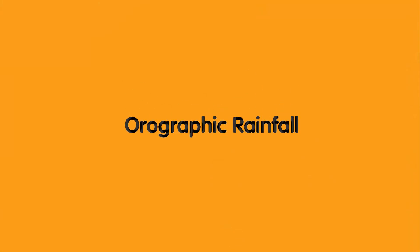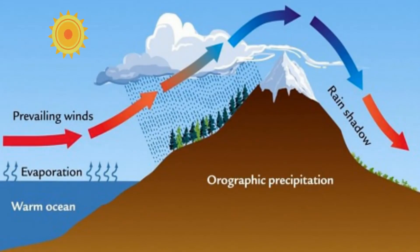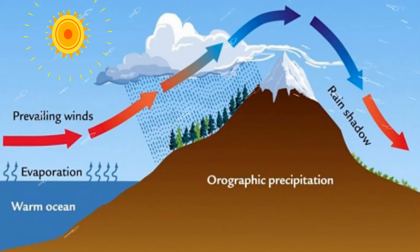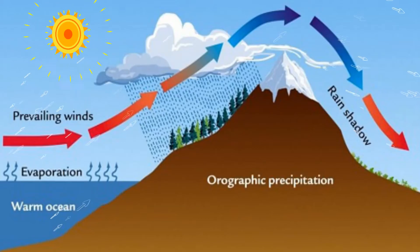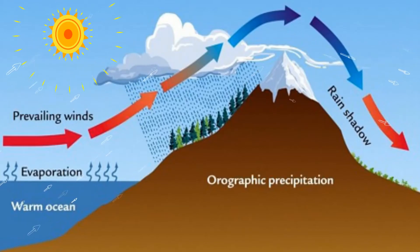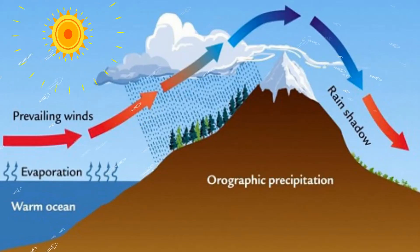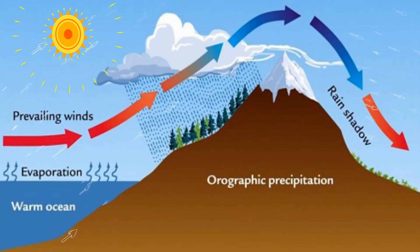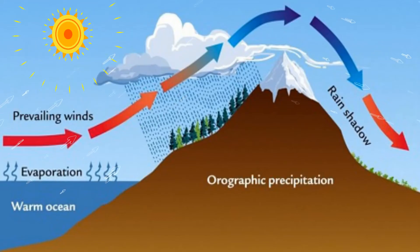Orographic, or relief, rainfall is caused when masses of air are forced up the side of elevated land formations such as large mountains. The lift of the air up the side of the mountain results in adiabatic cooling and ultimately condensation and precipitation. In mountainous parts of the world subjected to relatively consistent winds, a more moist climate usually prevails on the windward side of a mountain than on the leeward side. Moisture is removed by orographic lift, leaving drier air on the descending leeward side where a rain shadow is observed.